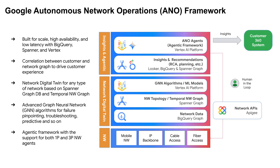The third major piece of this framework is the network digital twin, which represents the network topology and is built using GraphDB. It has the concept of temporal — the ability for the graph to maintain digital snapshots of the network as it changes from time A to time B. On top of this Spanner graph, we apply GNN algorithms — graph neural network algorithms — to create deep learning about the graph, enabling use cases such as failure pinpointing, troubleshooting, and more. We will cover GNNs in more detail later.